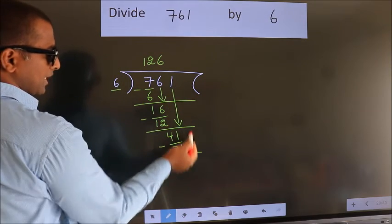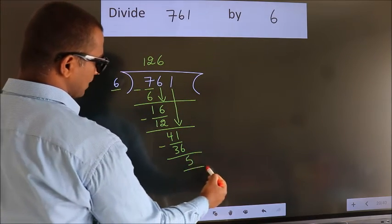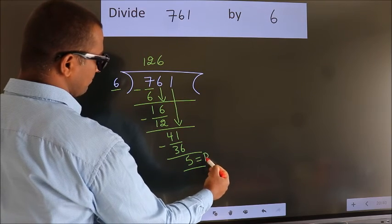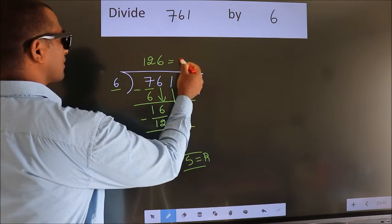No more numbers to bring it down. So we stop here. This is our remainder. This is our quotient.